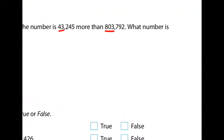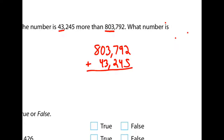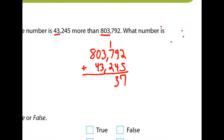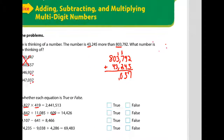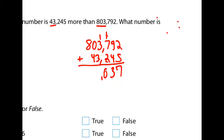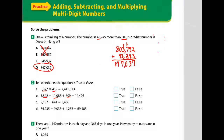Ready: 803,792 plus 43,245. Seven plus five is twelve — they both end in seven... nine and four is 13, carry the one. The next digit: seven, eight, nine, ten — carry the one. I don't need to do anymore — I know it's D because I got a zero there. I'll finish it so you can see: seven, four, eight — and that is D. Give yourself a check.